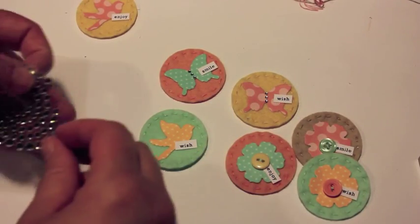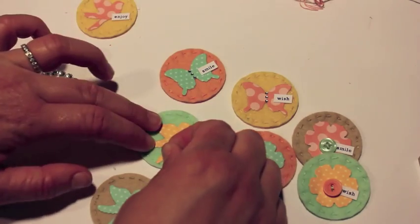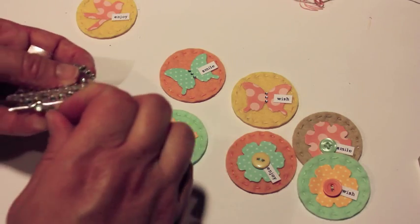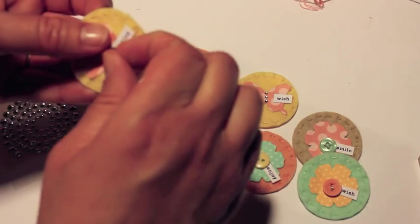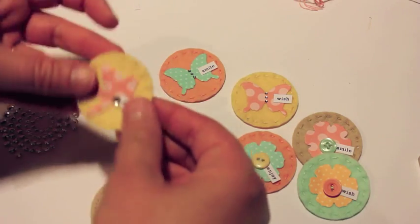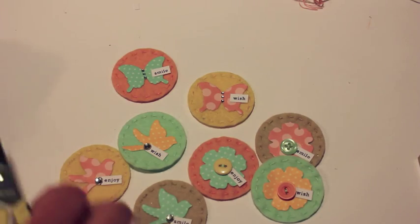And then finally a simple rhinestone added to the bird. I'm just going to stick it at one end of the sentiment just to give it a little extra sparkle and this kind of finishes off that particular badge itself. So sometimes you don't really need to do a whole lot. Just keep it simple and they turned out beautiful.